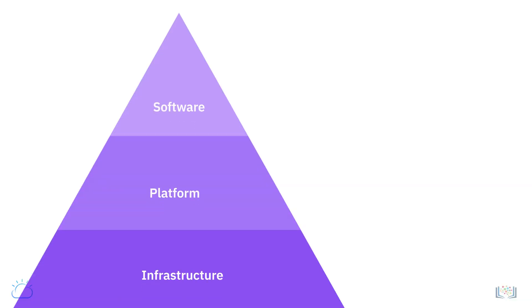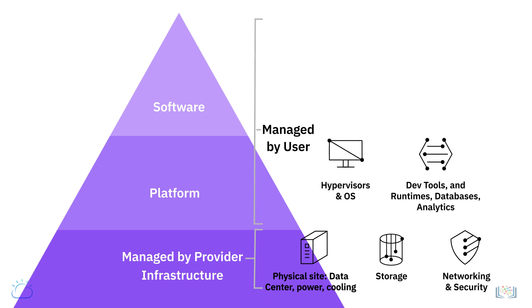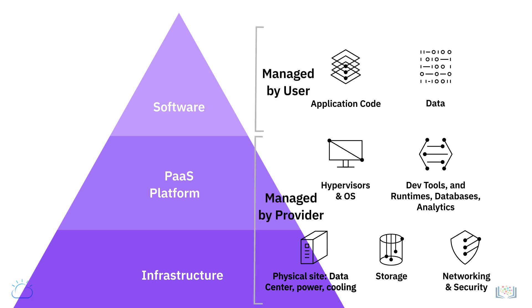With IaaS, the cloud provider offers access to raw computing resources such as servers, storage, and networking, while the user is responsible for the platform and application software. With PaaS, the cloud service provider delivers and manages the entire platform infrastructure, abstracting users from the lower-level details of the environment.